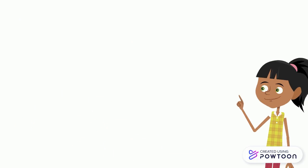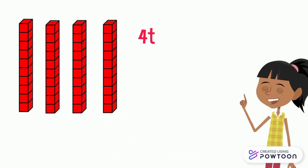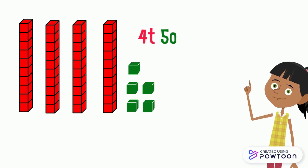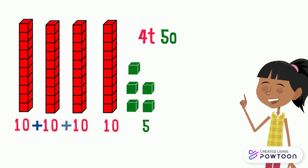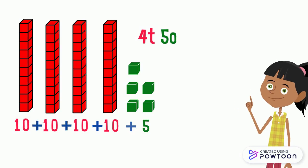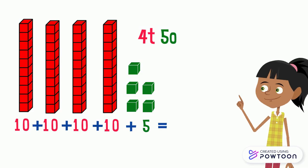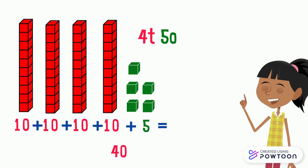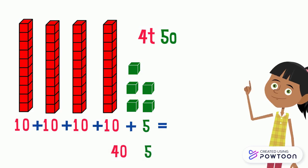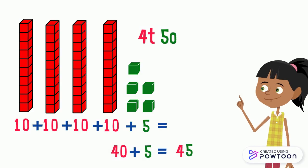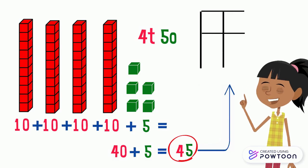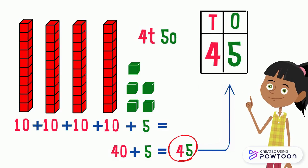Another example: we have 4 tens and 5 ones. Each 1 ten is 10 and 5 ones equals 5, so 10 plus 10 plus 10 plus 10 plus 5. 4 tens equals 40 and 5 ones equals 5, so 40 plus 5 equals 45. In the number 45 we have 4 tens and 5 ones.